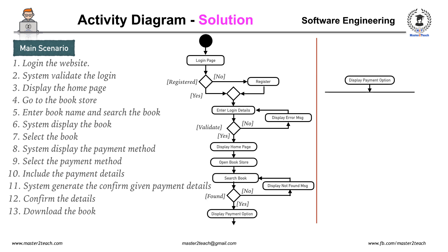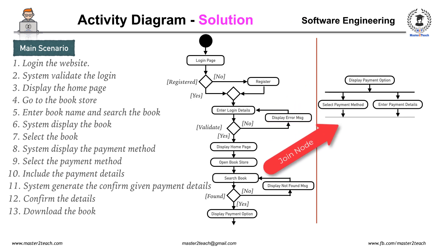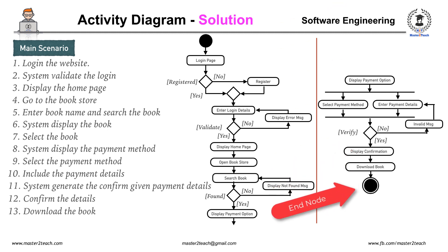Moving forward, the user can select the payment method and enter payment details, which we show using a fork node. Using the join node to follow it, add another decision node for the validation of payment details. If invalid, display an invalid error message and make it iterative as well. If payment is successful, display a confirmation activity, then download the book, and after downloading, the activity ends with the end node.